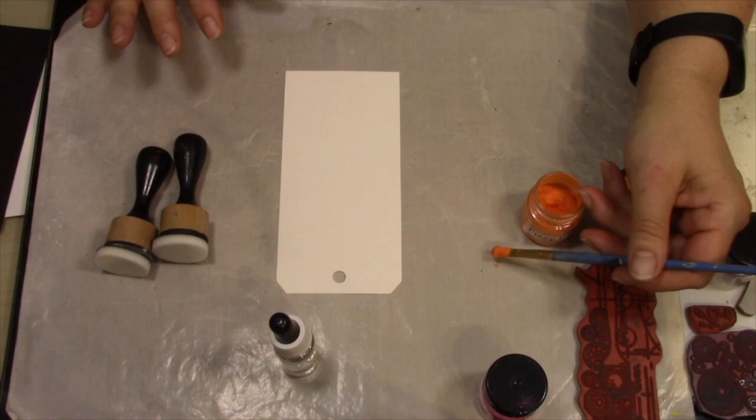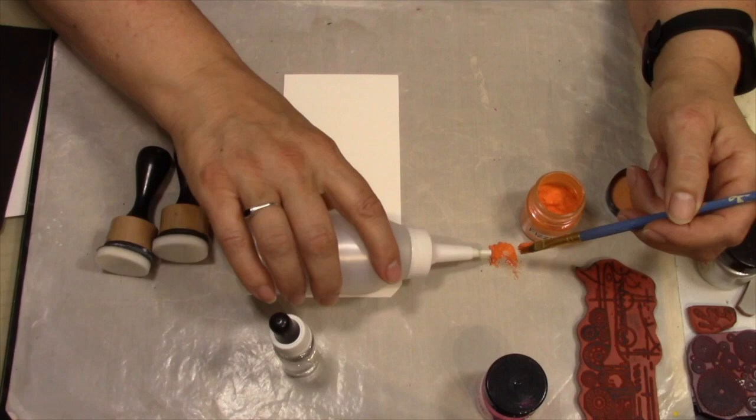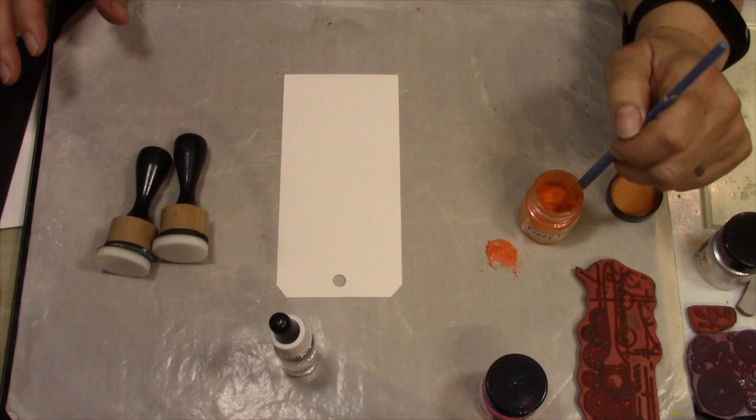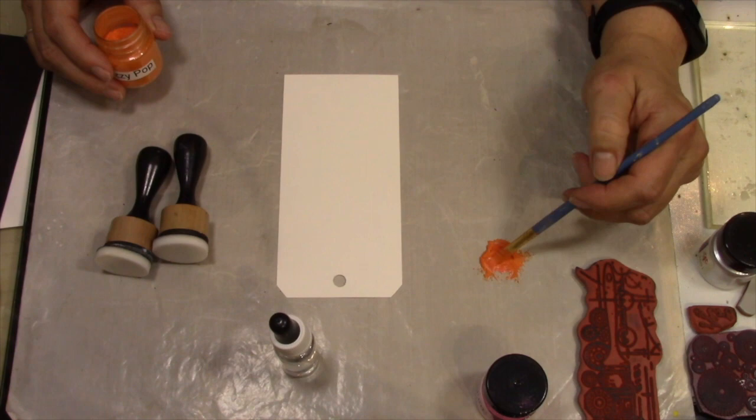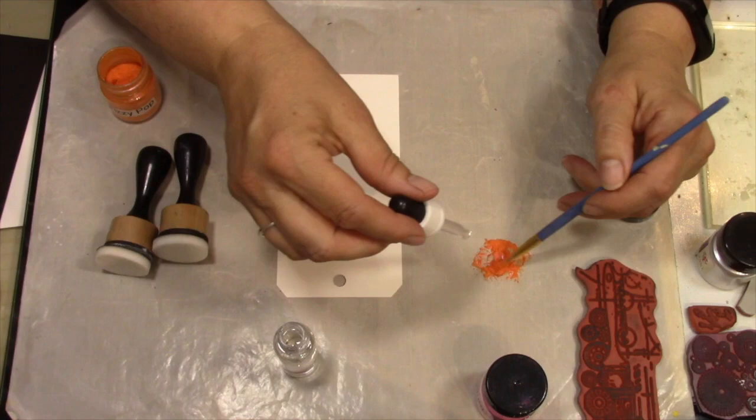I've dipped my brush into some water adding a little extra to make a puddle. Being careful not to get all the powder everywhere, I'm going to add one drop of glycerin. One drop is enough - it just makes it move across the tag a lot better.